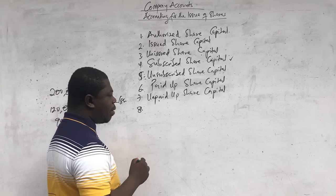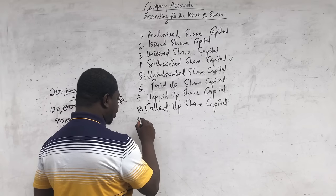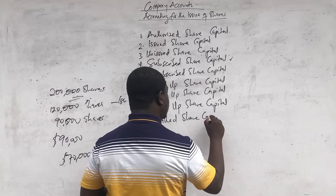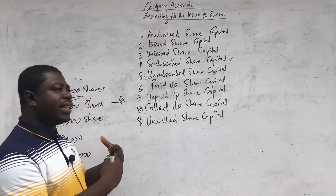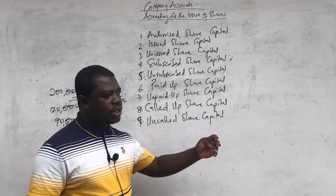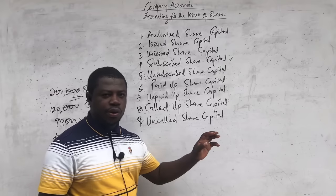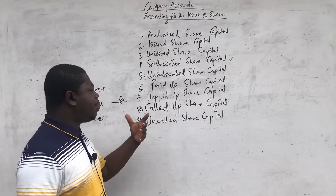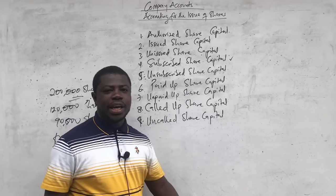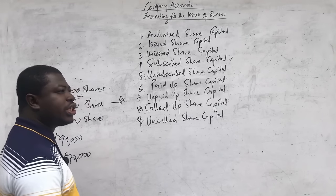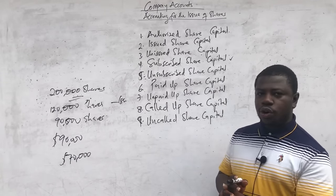There are instances where we call shareholders to come and pay outstanding amounts. We also have called-up share capital and uncalled share capital. The called-up share capital is the proportion of the subscribed capital that the shareholders have been called to come and pay. The uncalled capital is the part of the subscribed shares which shareholders are yet to be called to come and pay. These terms follow in a logical order, so let us understand that as we move to the double entry for the issue of shares.